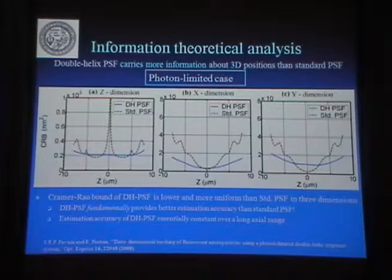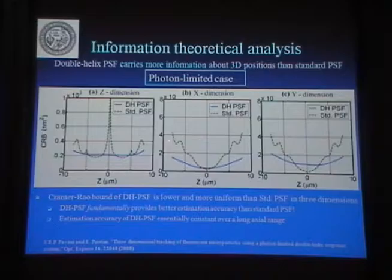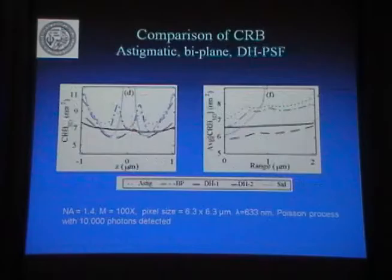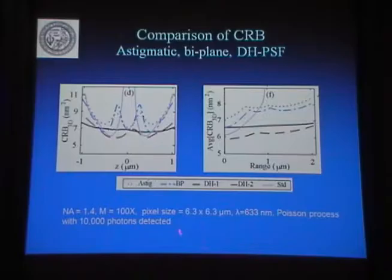When you calculate this Cramér-Rao bound, you need to look at the level of noise and also the distribution of noise — it could be Poisson or Gaussian. In the photon-limited case, we use Poisson distribution. You can see that you get a mostly lower CRB or variance, and also a more constant value, meaning that you can make these measurements over a long range. Here we compare the double helix to two other methods I mentioned before — the biplane and the astigmatic — and we can show that the double helix is always below, meaning it has lower variance. All these parameters — numerical aperture, magnification, pixel size — are implicit in this calculation.